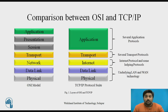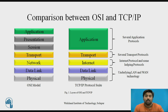The main similarities between the two models are: both models share a similar architecture, constructed with layers. Both models share a common application layer; however, in practice this layer includes different services depending upon each model. Both models have comparable transport and network layers — whatever functions are performed between the presentation and network layer of the OSI model, similar functions are performed at the transport layer of the TCP/IP model.